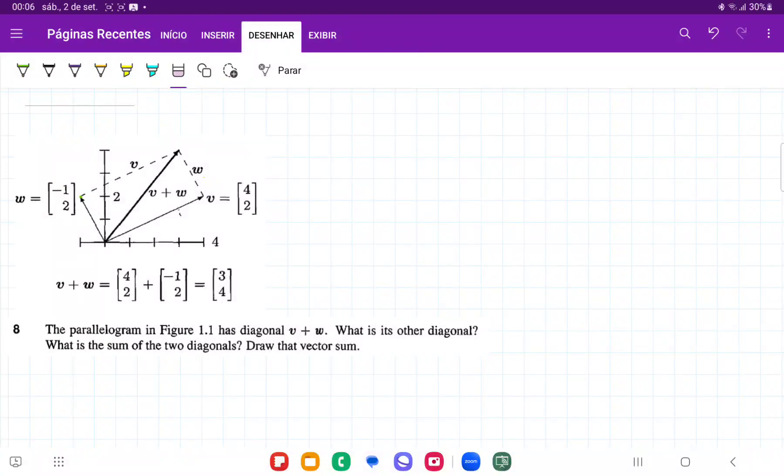So for number 8, we're given the parallelogram in figure 1.1, where the diagonal is V plus W. So V plus W is this diagonal here. And then it wants us to find the other diagonal which goes from here to there.